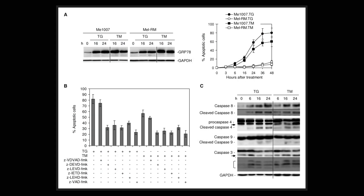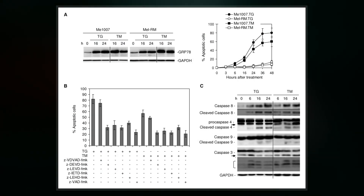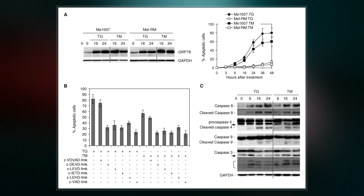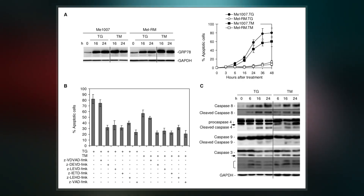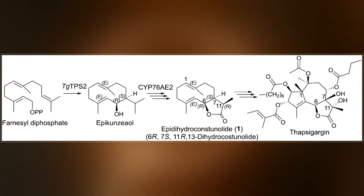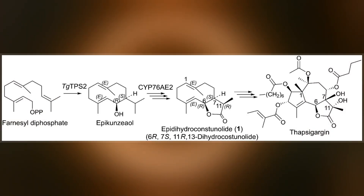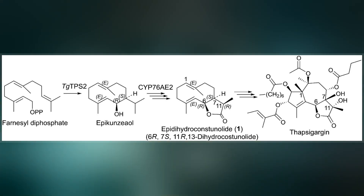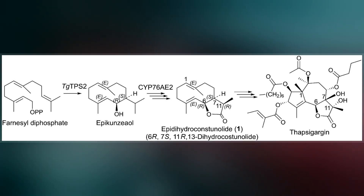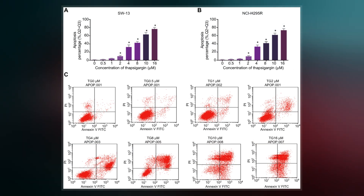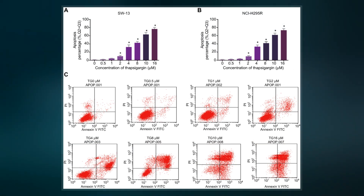Thapsigargin raises cytosolic calcium concentration by blocking the ability of the cell to pump calcium into the sarcoplasmic and endoplasmic reticula. Store depletion can secondarily activate plasma membrane calcium channels, allowing an influx of calcium into the cytosol.